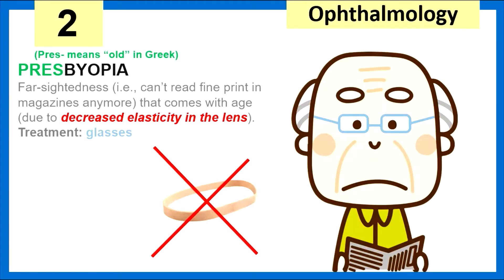Next, presbyopia — farsightedness, meaning the patient can't read fine print anymore. That comes with age, and it makes sense: 'pres' means old in Greek, like in 'presbyterian.' This is a condition that comes with age and is due to decreased elasticity in the lens. We treat this condition with glasses.